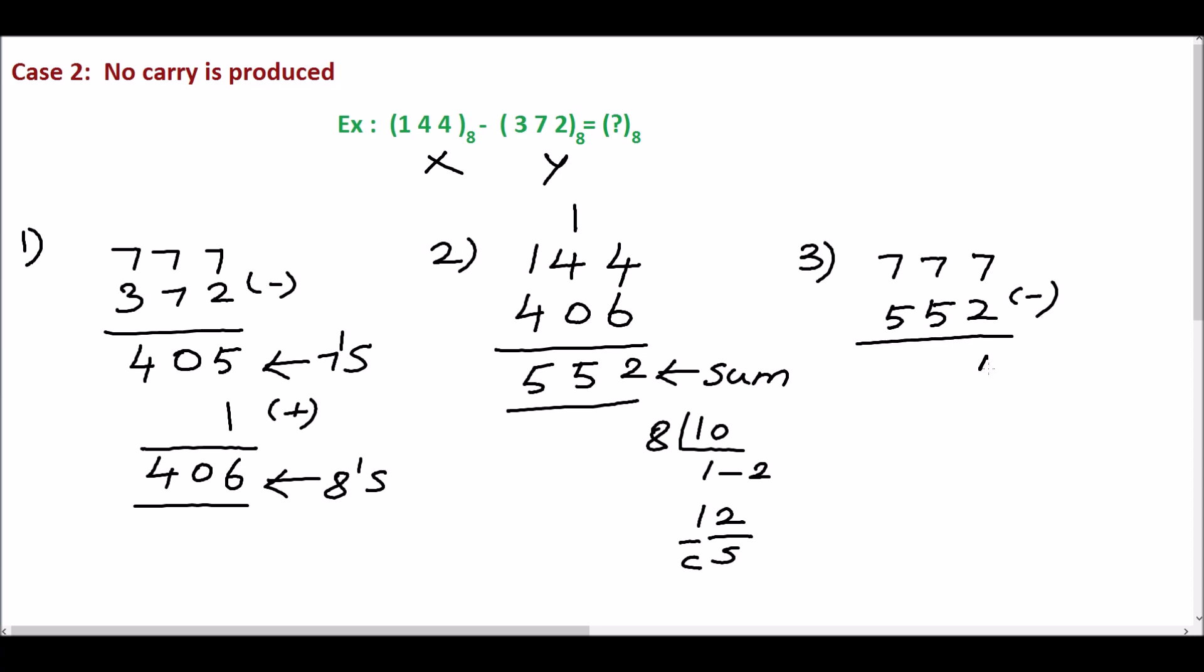Subtract this. 7 minus 2 is 5. 7 minus 5 is 2. 7 minus 5 is 2. This is 7th complement. Add 1 with this. 5 plus 1 is 6. 2, 2. This is 8th complement.